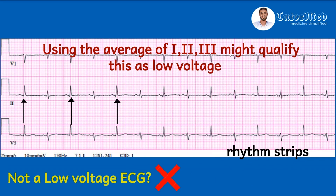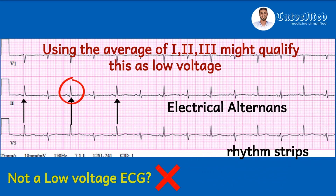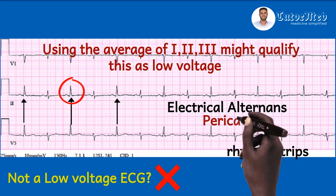For the demonstration of significant pericardial effusion, look at the QRS complexes in lead II. A relatively tall QRS complex alternates with a relatively short one — the first is tall, the second short, the third tall, the fourth short, and so on. This alternating amplitude of the QRS complex is known as electrical alternans, and it is very characteristic of massive or significant pericardial effusion.